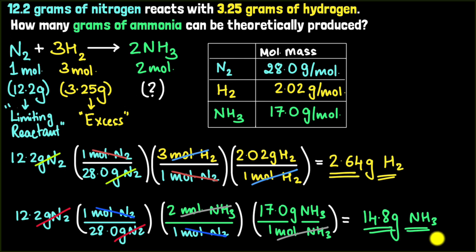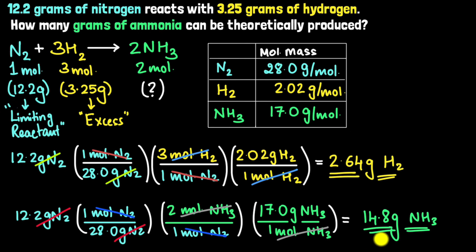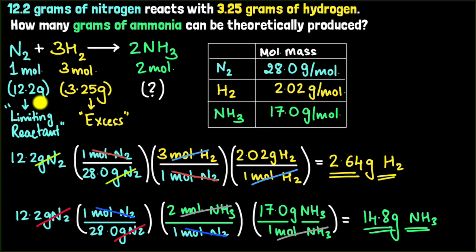This is the theoretical yield — on paper, this is how much we should get if we completely consume 12.2 grams of nitrogen. The actual yield in the lab could be less because of incomplete reactions where not all the nitrogen is consumed, or impurities in the experiment.